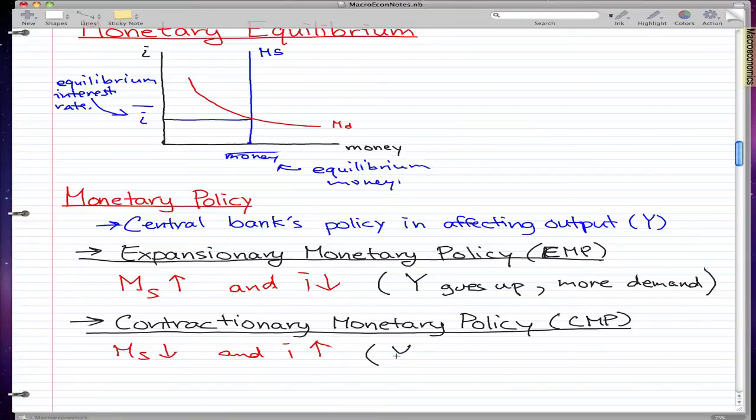In contractionary monetary policy, because of these two things - money supply going down and interest rates going up - output actually goes down and there is less demand. That is the exact opposite of what we just discussed. Interest rates go up, then you have to pay more of your money to interest. Your income or output drops, and then you have less to spend, which is why you have less demand.